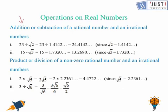Now we illustrate these with some examples. Here are the examples for addition and subtraction. As you can see, 23 is a rational number and √2 is an irrational number — when you add them you get an irrational number. Then 15 minus √3: since 15 is rational and √3 is irrational, when you subtract them the answer is irrational again.